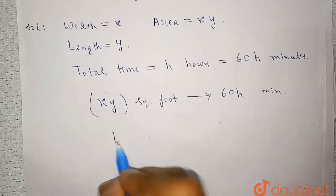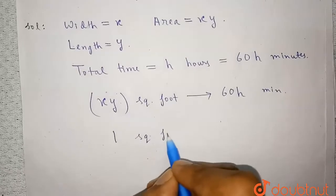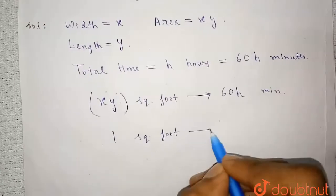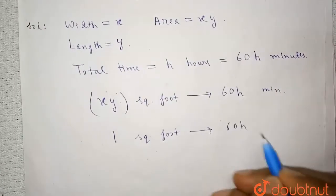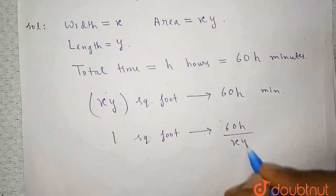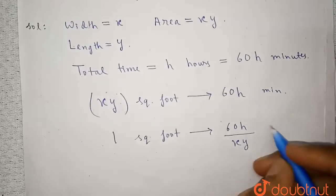To paint one square foot, using unitary method, it will take less time, that is 60H by XY minute.